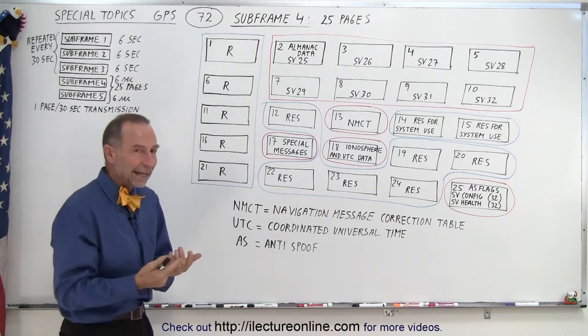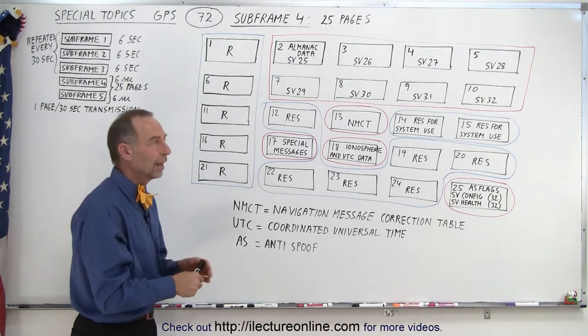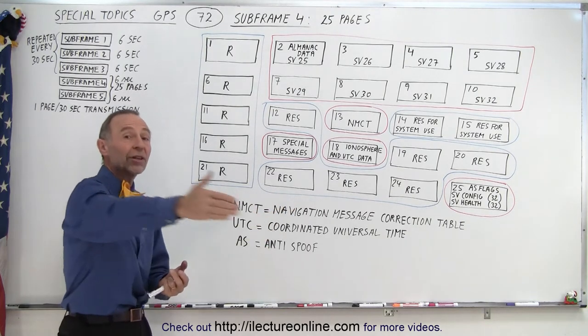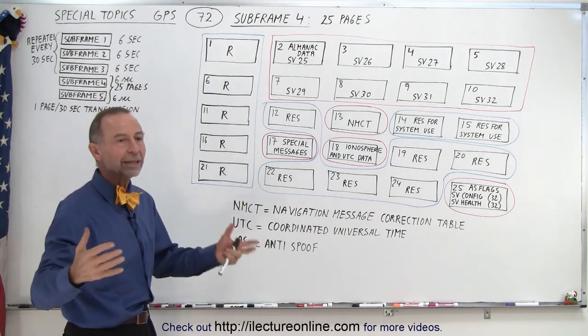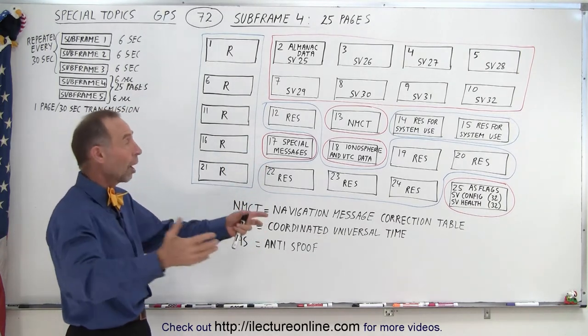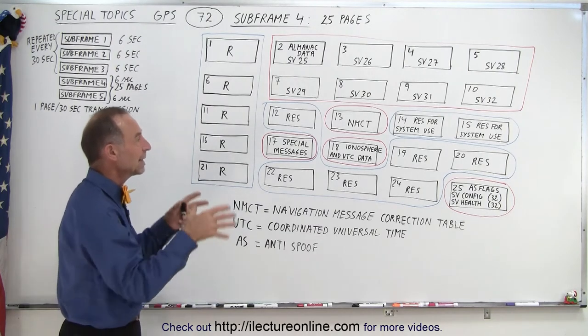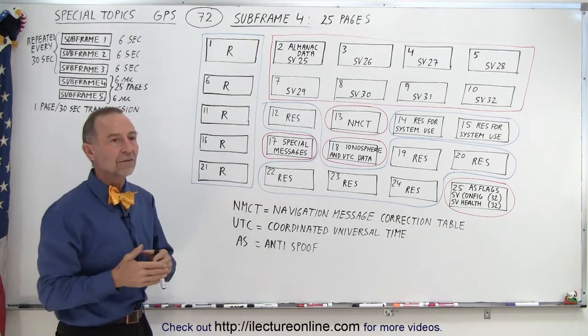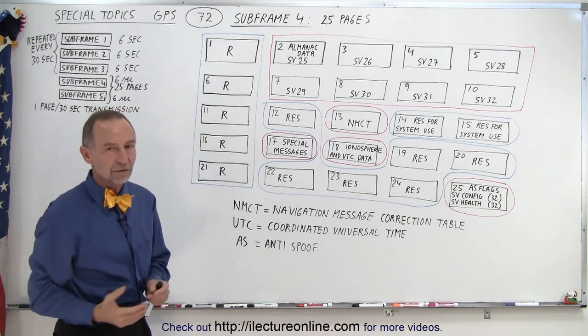Now almanac data is similar to ephemeris data but not as accurate. And almanac data is present in each satellite for the entire constellation, so all the orbital parameter data of each of the up to 32 satellites is contained within the navigation message inside each of the SVs. So each SV has the orbital data of all the SVs in the constellation.